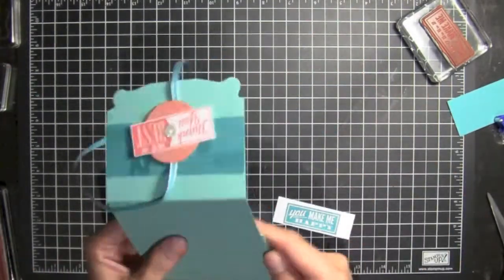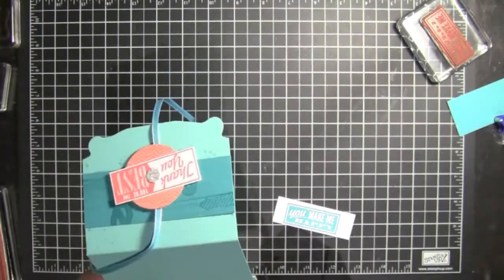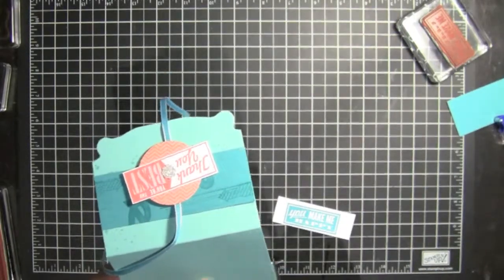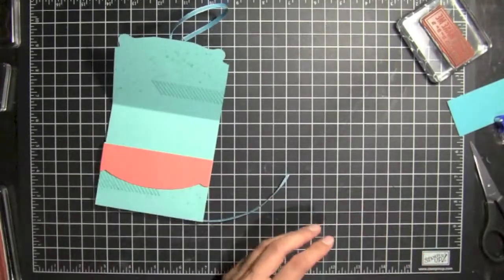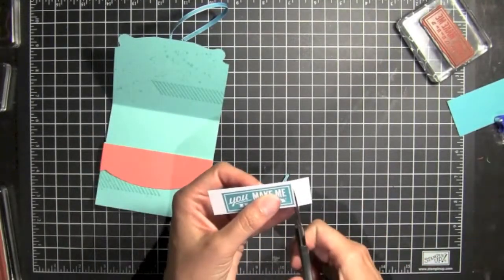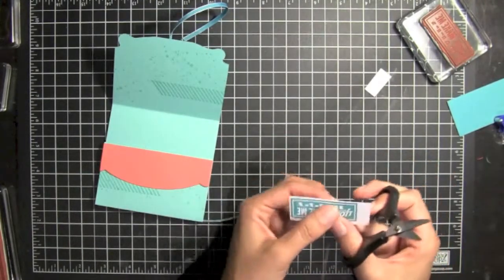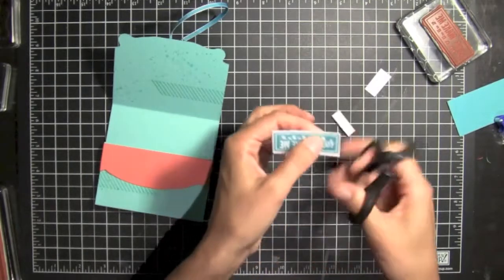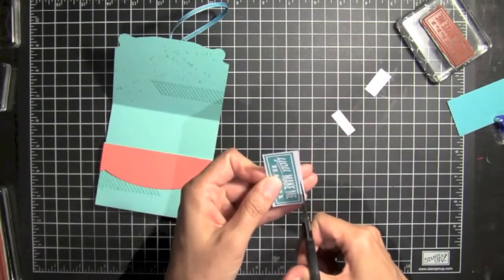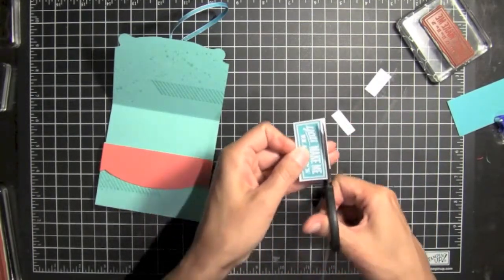And then if there's anything you need to trim on the side, we can trim some of this on the side. Okay. And then we're going to trim this for our little pocket. And then we're going to place this on the inside and then it's all ready to go.